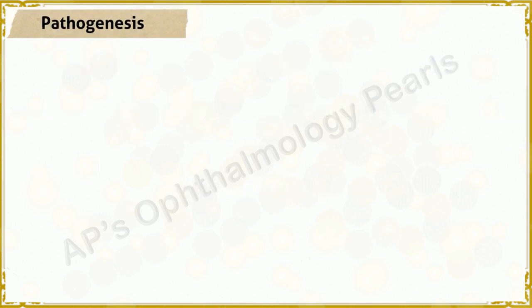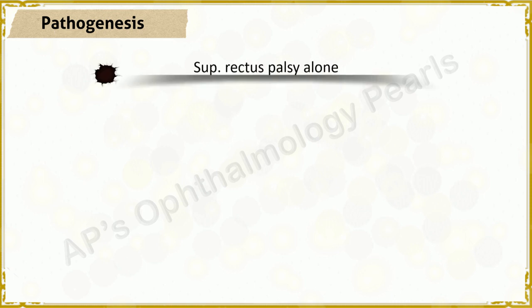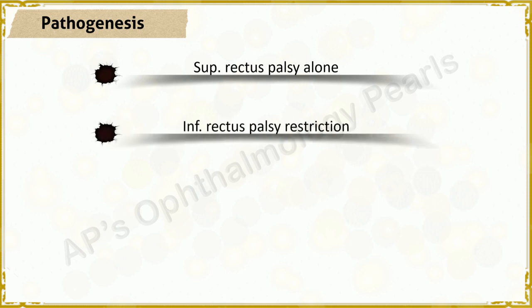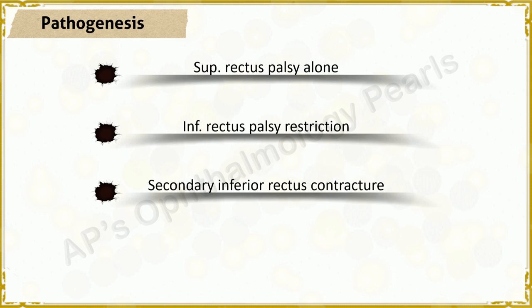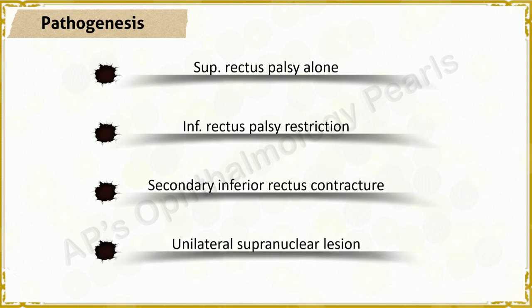Regarding pathogenesis, in some cases the defective elevation can be explained by the presence of a superior rectus palsy alone. In others, a primary inferior rectus restriction or secondary contracture of the inferior rectus due to chronic hypotropia — either from superior rectus weakness or a supranuclear lesion — is responsible. In some others, a supranuclear lesion is responsible.